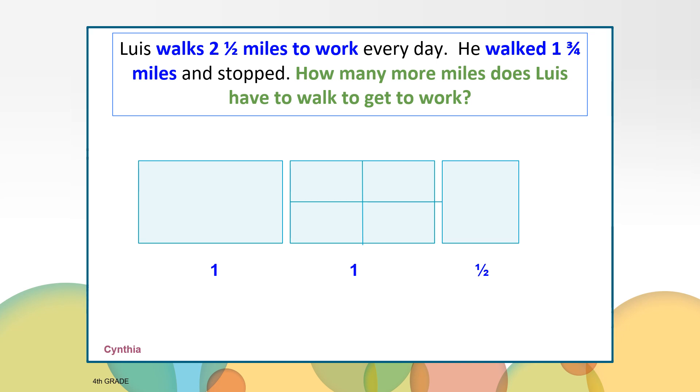Now let's look at Cynthia's solution. Cynthia drew a model to represent the two and a half miles. Then she subtracted the one and three fourths miles that Lewis walked. She could then see that there was one fourth of a full mile left and that she could cut her half mile into two fourths of a mile to see that Lewis still had to walk three fourths of a mile.